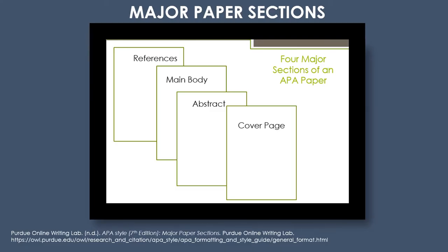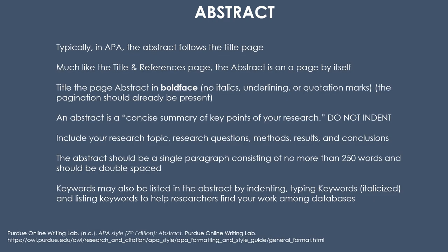There are four major sections in an APA paper: the title page, abstract, main body, and a references page. If you've never written an abstract, don't panic. An abstract is simply a concise summary of key points in your research. The abstract is a single paragraph with 150 to 250 words. You can use keywords to help researchers find your work. There's a separate video available on our YouTube channel about writing abstracts.